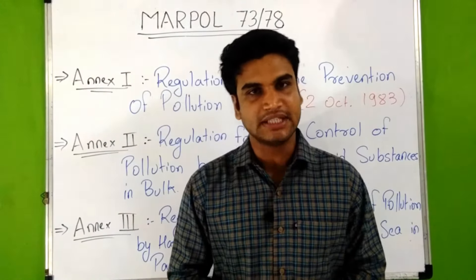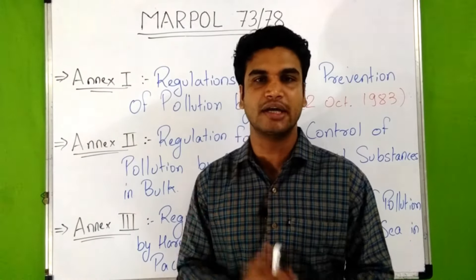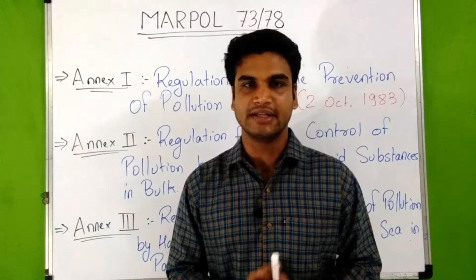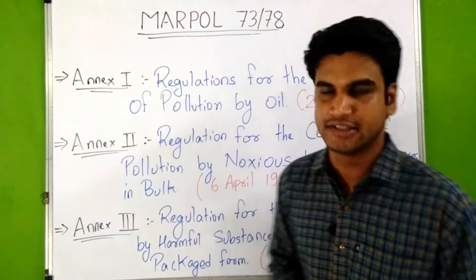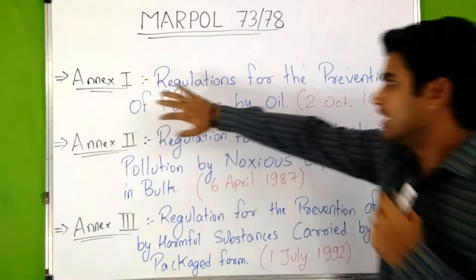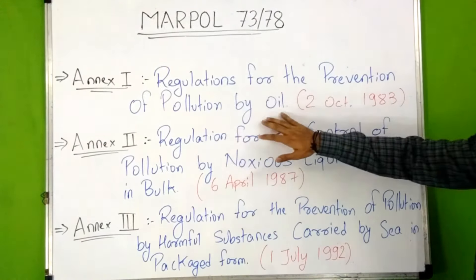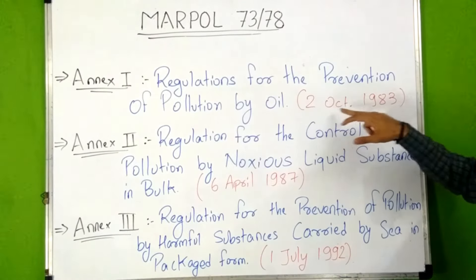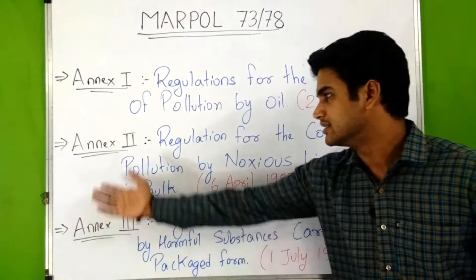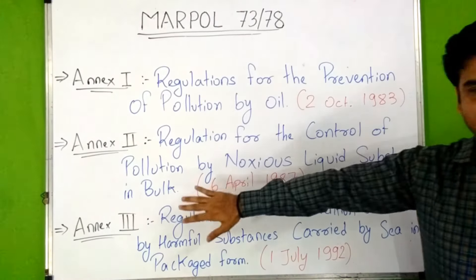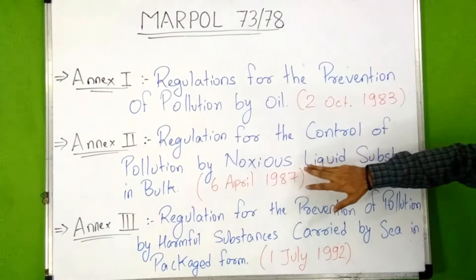The regulations of MARPOL 73/78 covering the various sources of ship-generated pollution are contained in six annexes. Annex I is the regulation for the prevention of pollution by oil; it came into force on 2nd October 1983. Annex II is the regulation for the control of pollution by noxious liquid substances in bulk; it came into force on 6th April 1987. Annex III is the regulation for the prevention of pollution by harmful substances carried by sea in packaged form; it came into force on 1st July 1992.